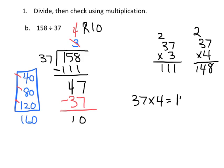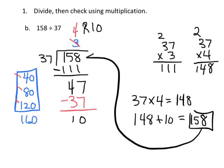So this is 148, and then I add in the 10 as our remainder and we get 158. Since I got 158 and that's what the dividend is, that confirms that my answer of 4 remainder 10 is correct.